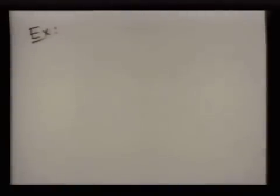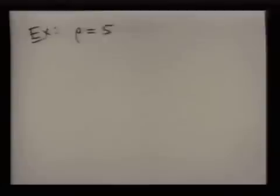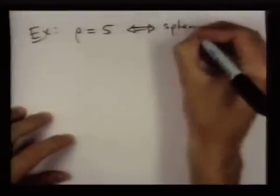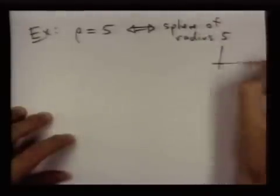Now, there's one final thing I'd like to mention. I'd like to sort of help you get a grasp on what these coordinates are doing by talking about the equation you get by setting each of the coordinates equal to a constant. For example, if I say rho is equal to 5, and I ask you what are all of the points in three dimensions whose value of rho is 5? Well, that's just saying their distance to the origin is equal to 5. So this describes the sphere of radius 5 in three dimensions.